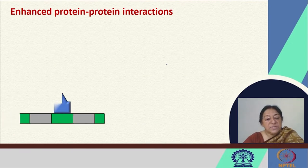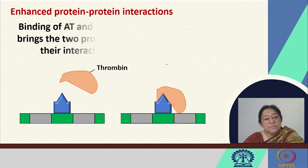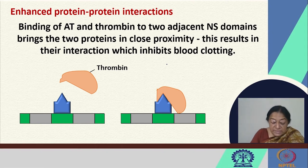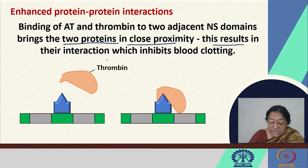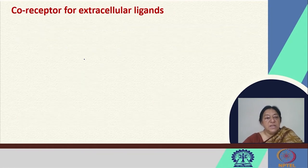Looking at a specific site, when modified antithrombin and thrombin come together, the binding of antithrombin and thrombin occurs in two adjacent domains, bringing the two proteins into close proximity. This results in an interaction which inhibits blood clotting — illustrating the specific workings of the cell due to protein-protein interactions based on carbohydrate binding.